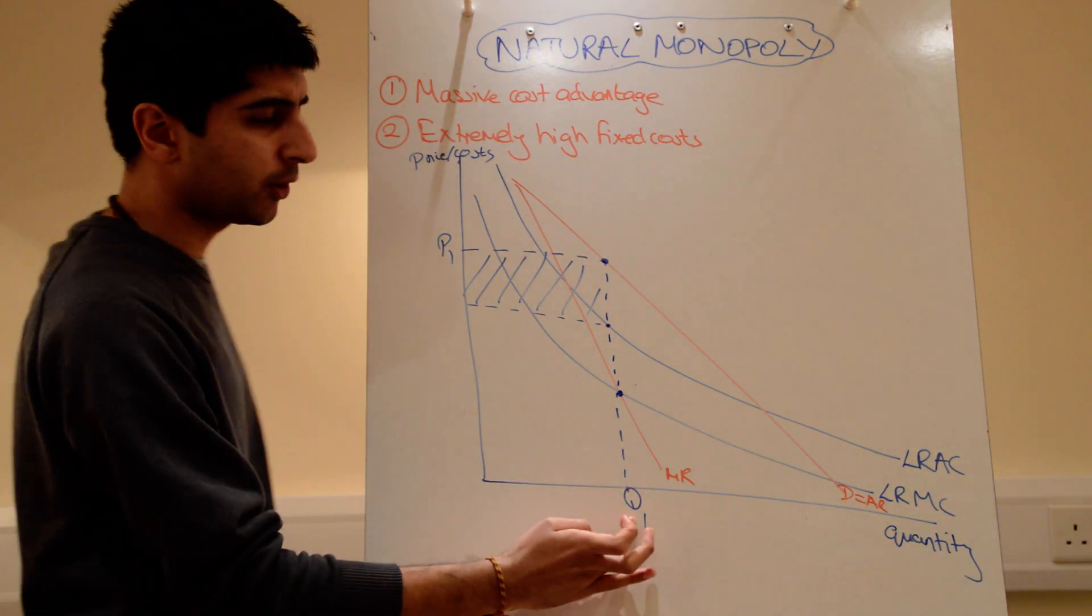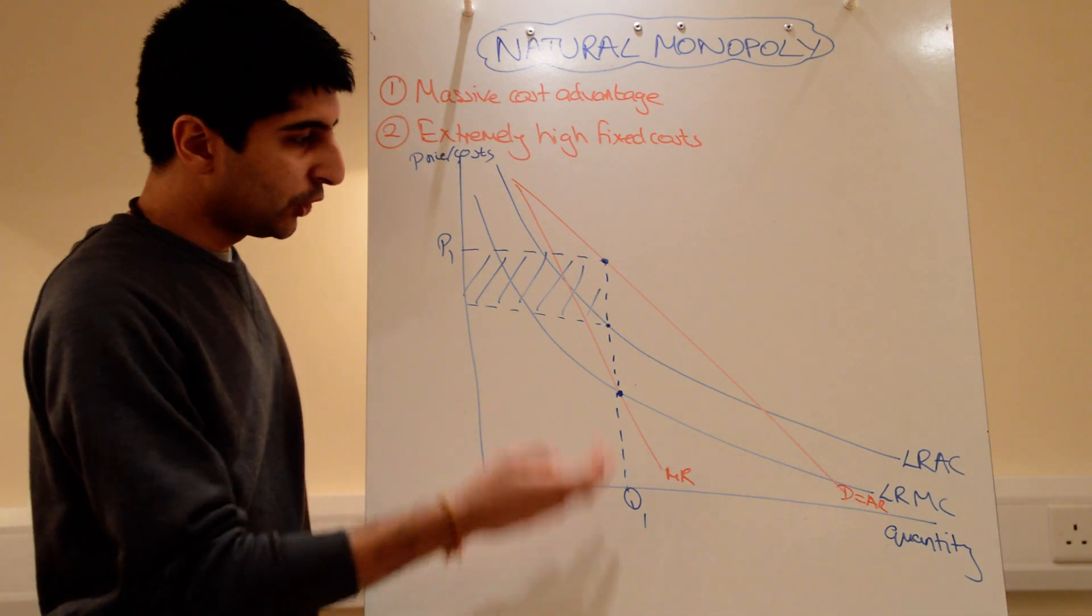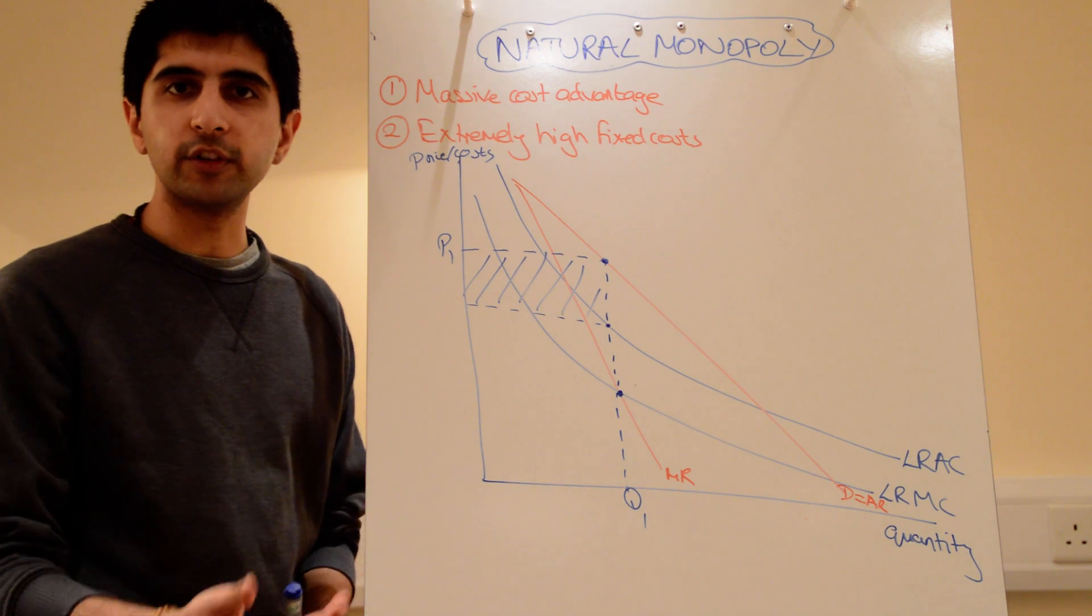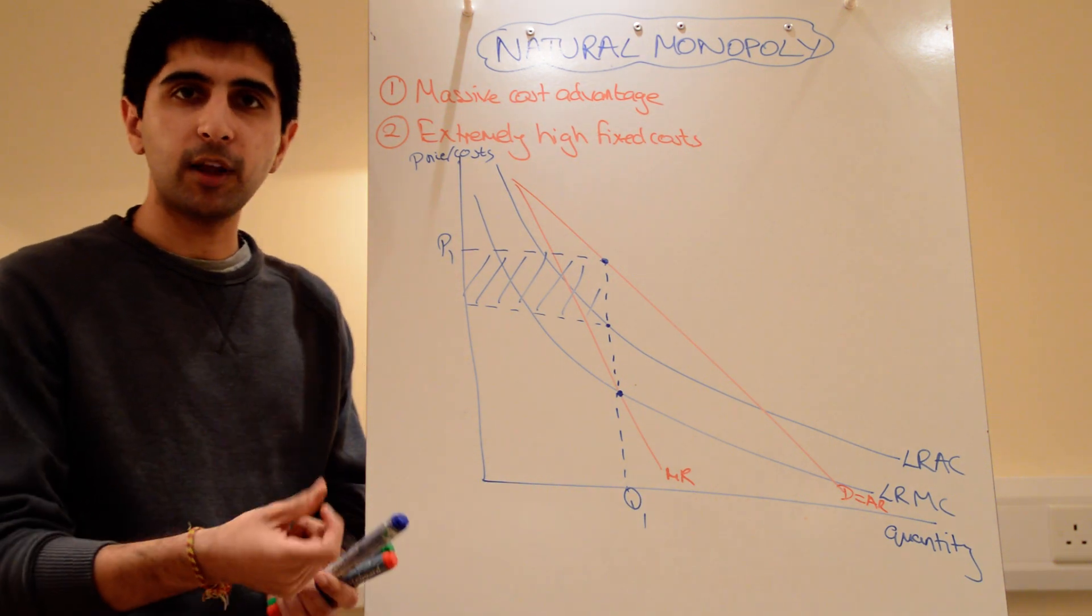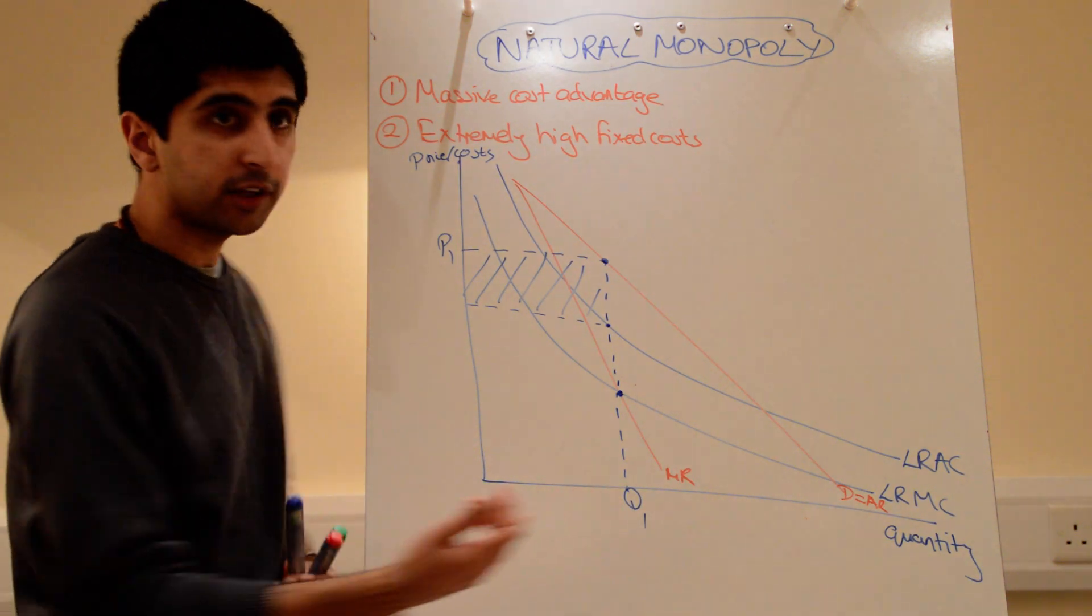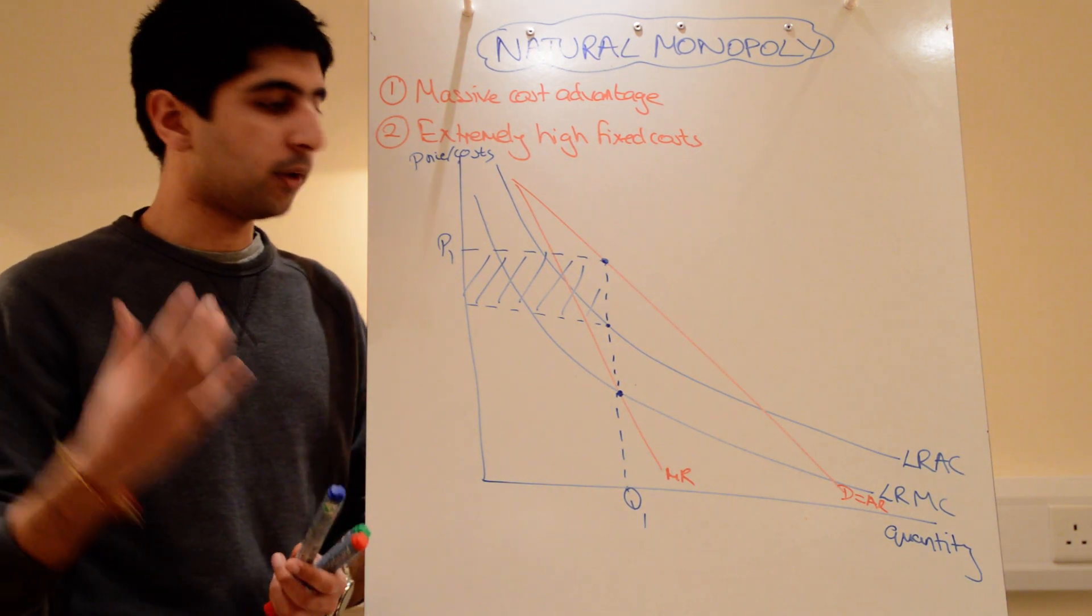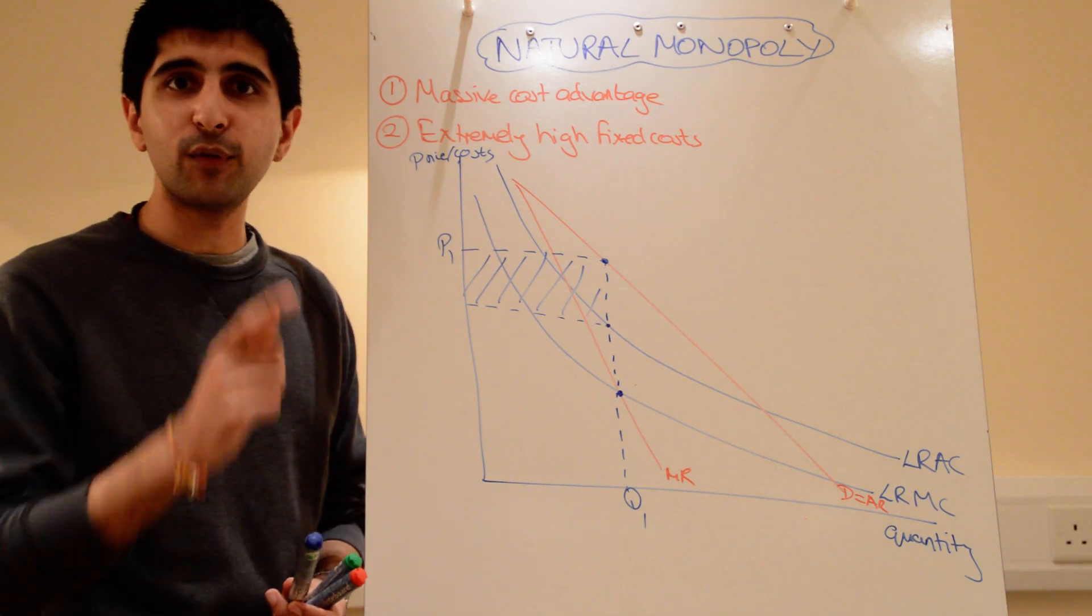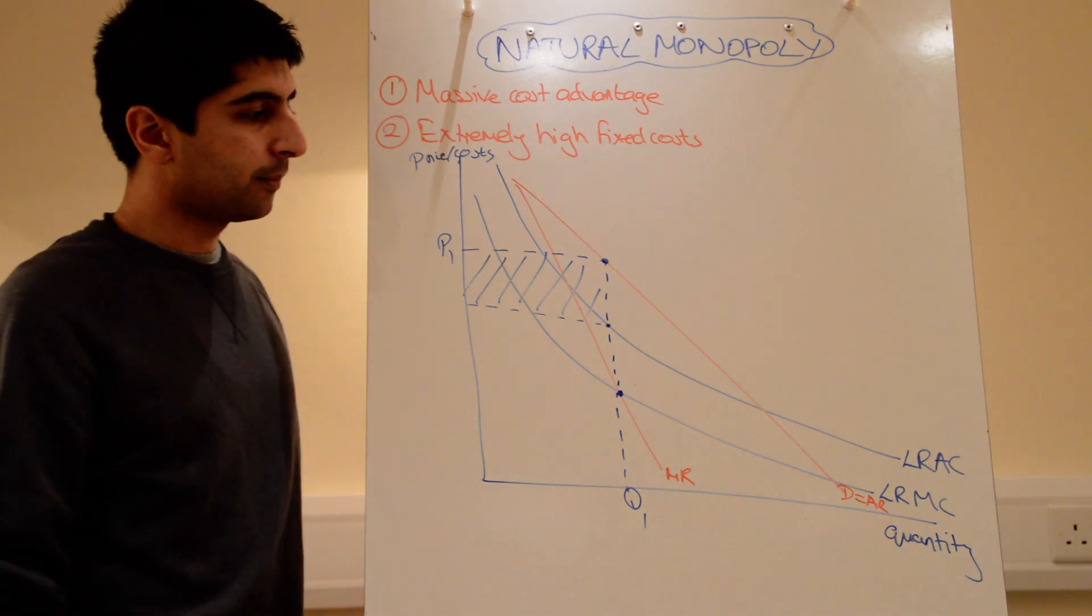So the government comes in and says, hang on a minute, natural monopolist. You're restricting quantity here, but in doing so, there are people that are not getting water. You've not built a pipeline big enough to actually get water across the whole country. Or you're not building a rail network big enough to supply the demands of the whole country. Therefore, sort yourself out. We're going to regulate you.